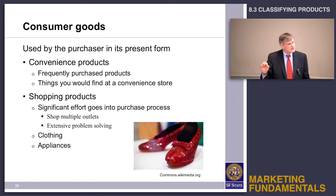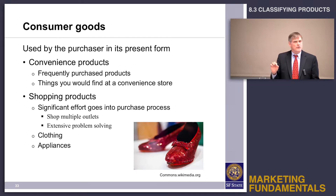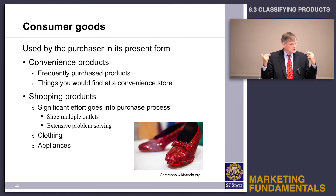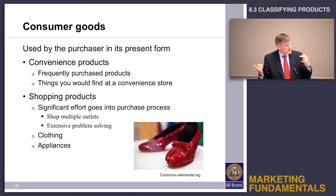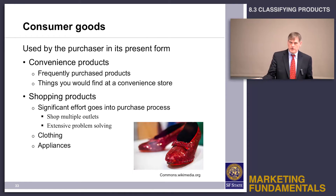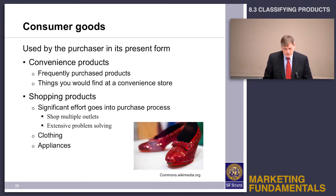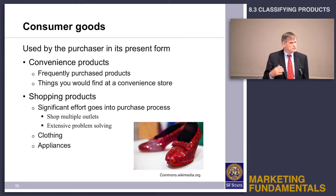A shopping product is a product for which you will probably expend some resources in making that decision. There's probably a little bit of risk — financial risk or social risk — associated with it, and you're probably going to consider more than one alternative. Clothing, appliances, and cars would be shopping goods.